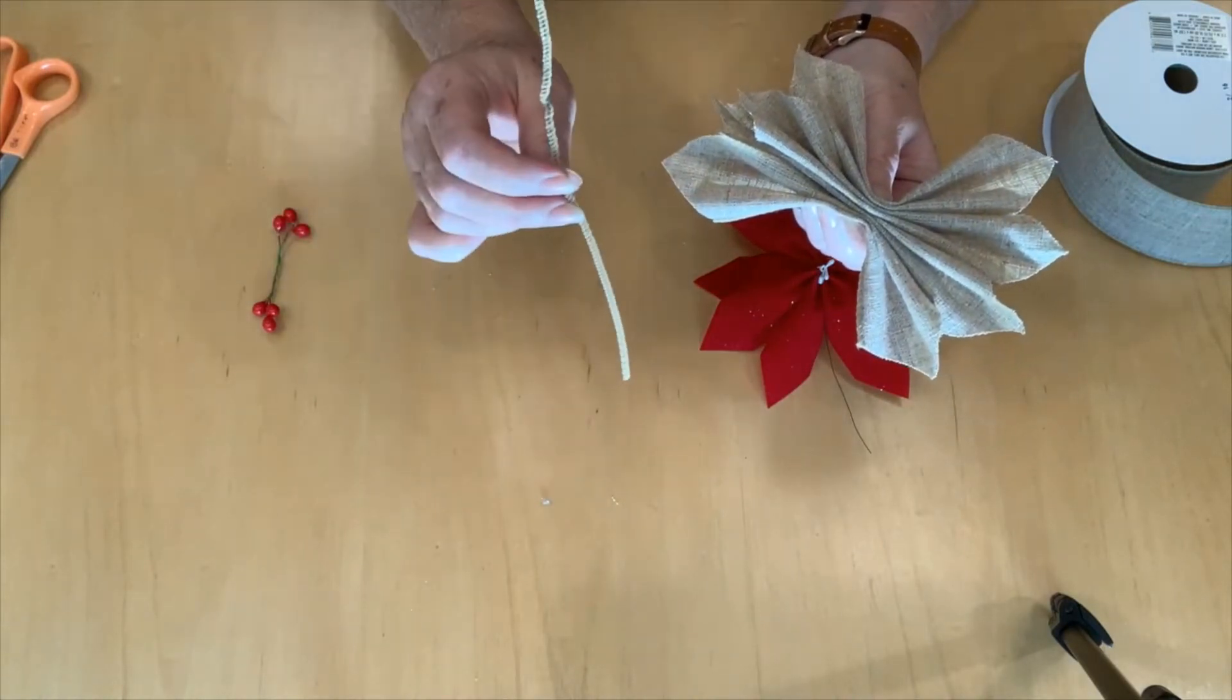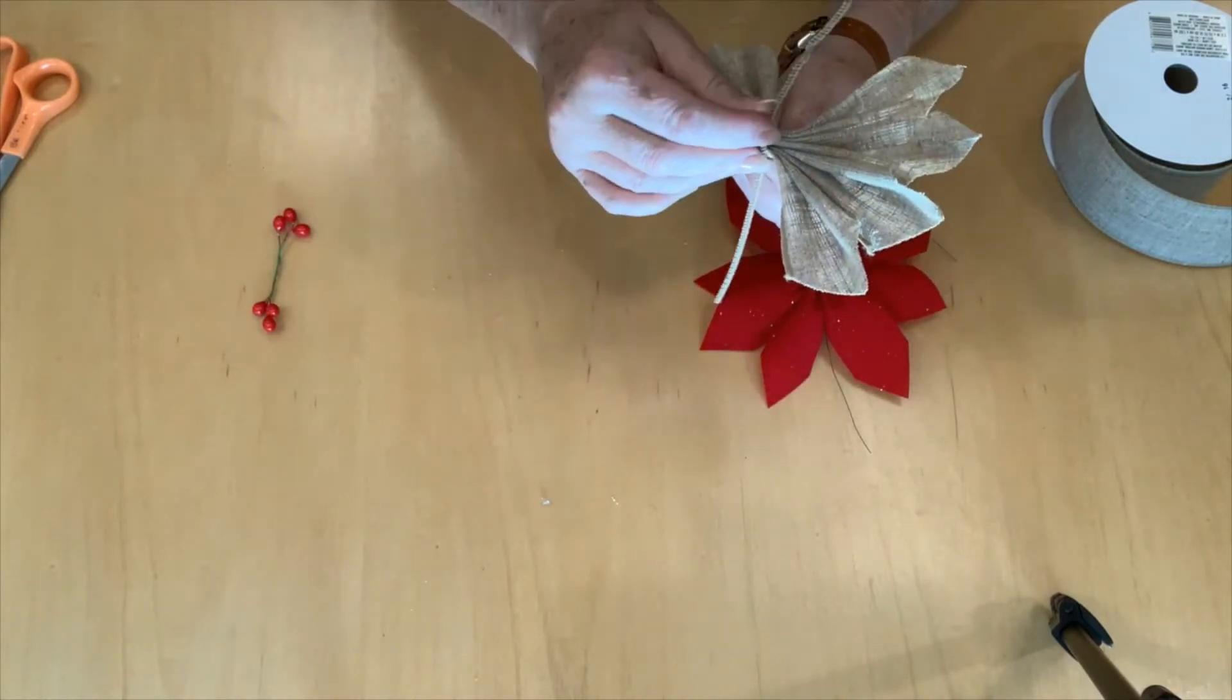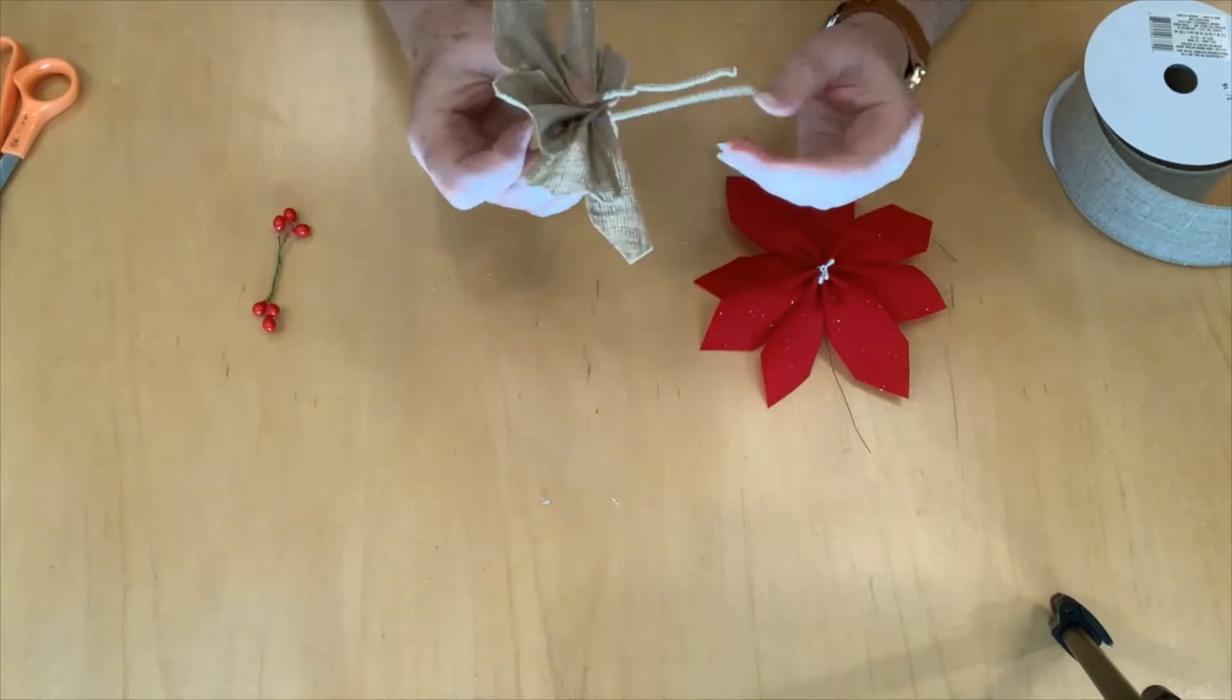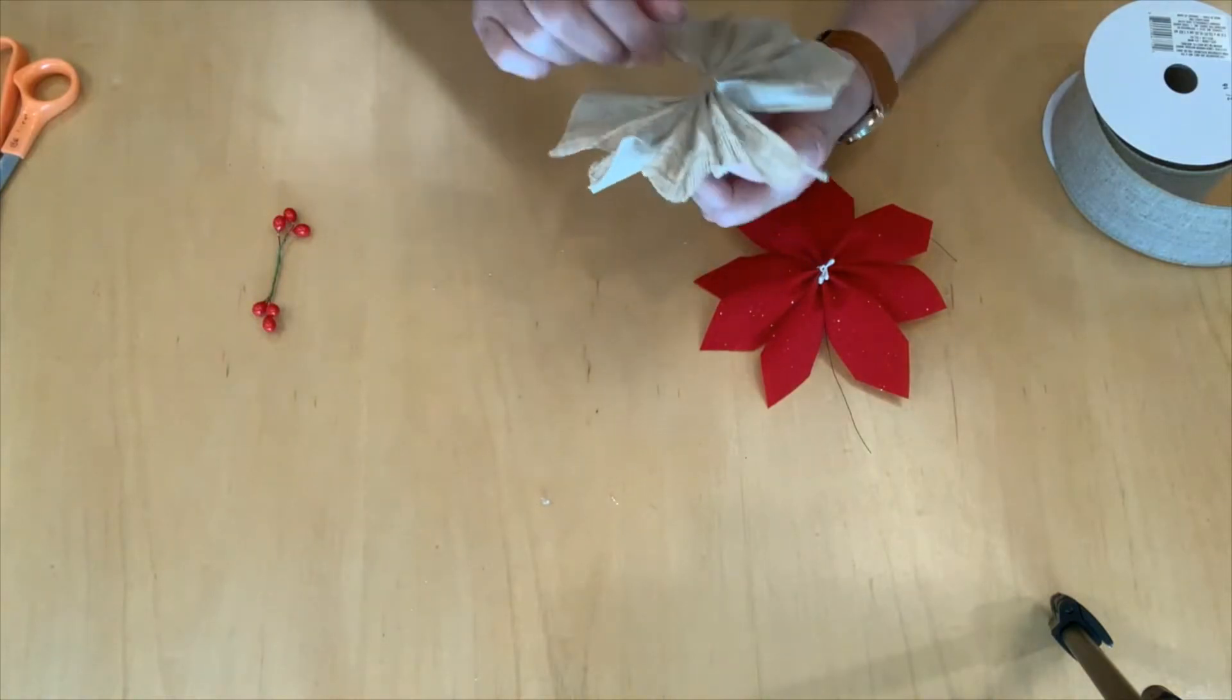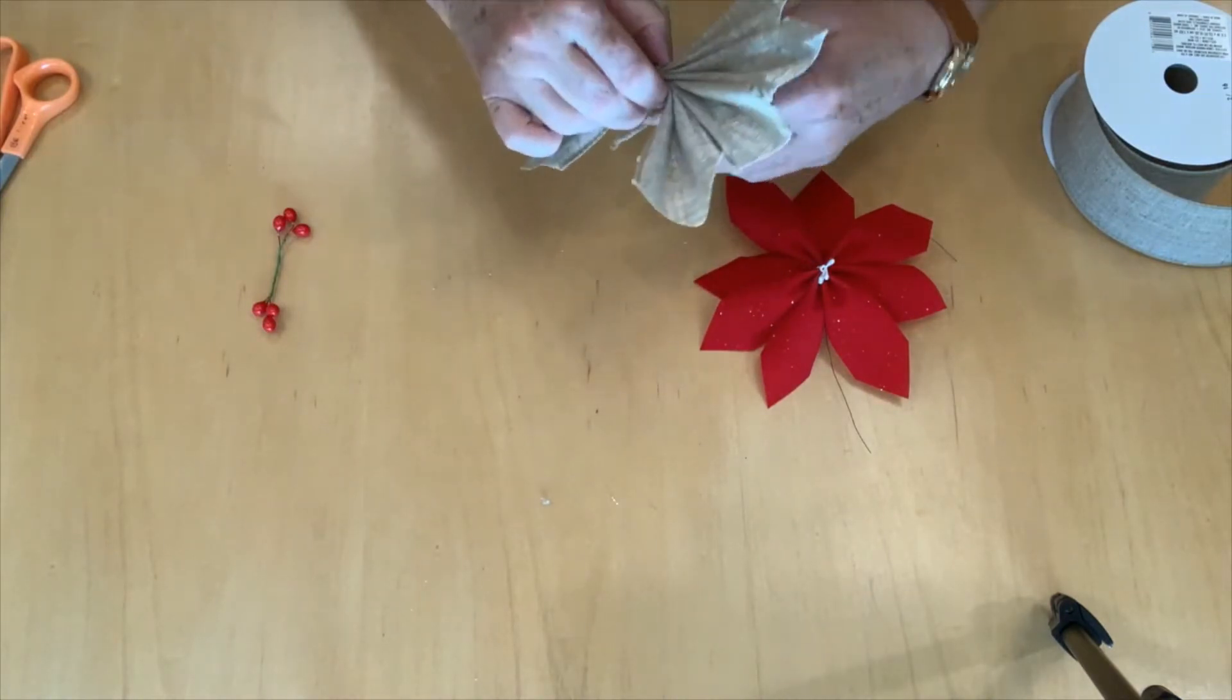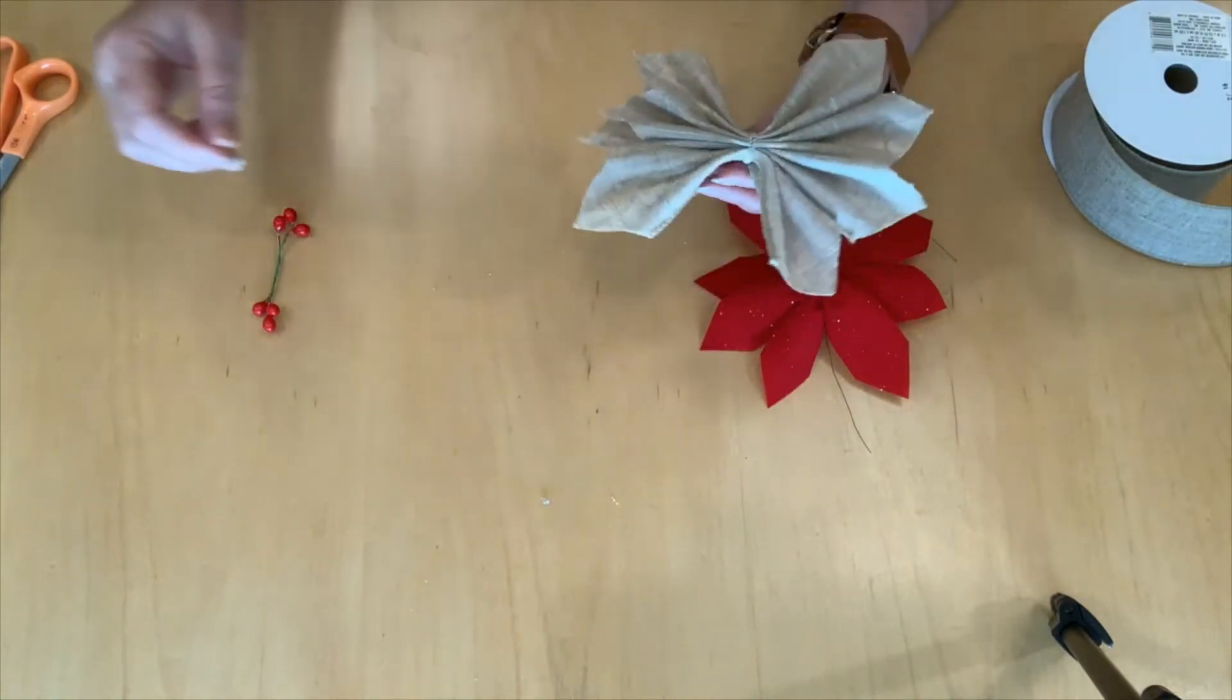I'm going to be taking your chenille wrap, your pipe cleaner, give it a good twist around. You can use florist wire too if you like. I like the chenille because I just happened to find it. It was exactly the same color.